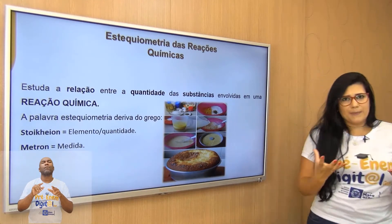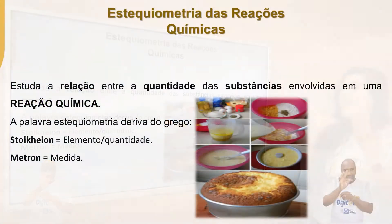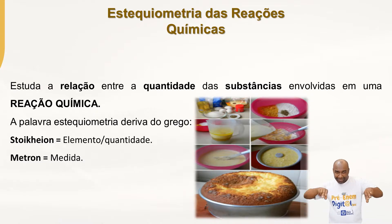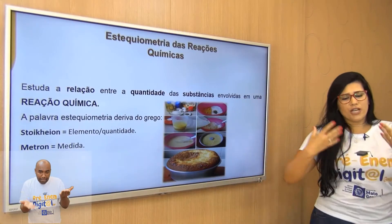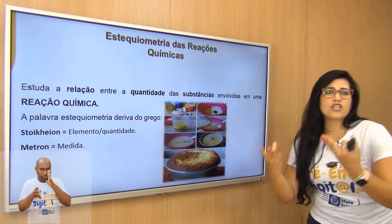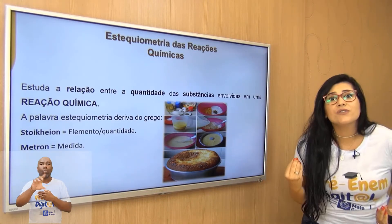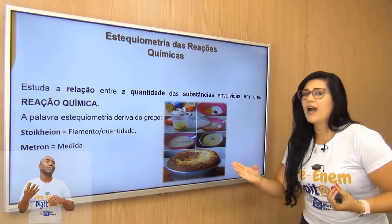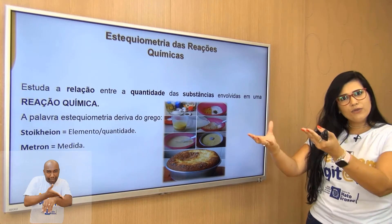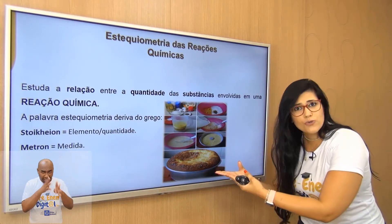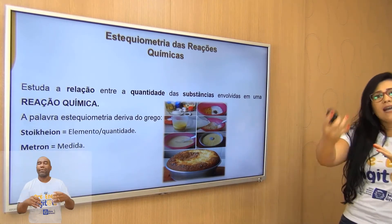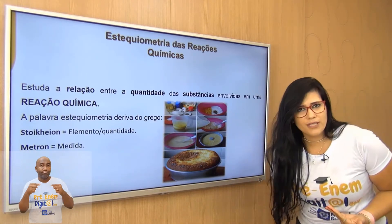Mas o que isso estuda? A Estequiometria das Reações Químicas estuda a relação entre as quantidades das substâncias em uma reação química. Quando a gente vai produzir um bolo, a gente tem que saber a quantidade de trigo, de fermento, de leite, de ovo, de açúcar. Isso é estequiometria — entender a quantidade para que meu produto final seja formado com sucesso. É a relação entre as quantidades das substâncias em uma reação química.